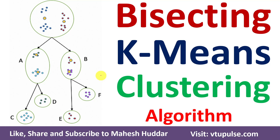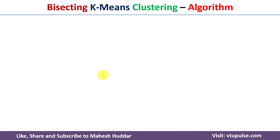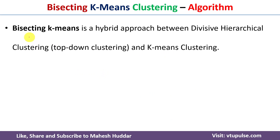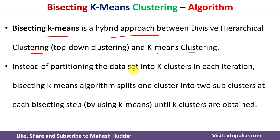Welcome back. In this video I will discuss the bisecting k-means clustering algorithm in machine learning with a simple example. First we will understand what bisecting k-means is — it is a hybrid approach between divisive hierarchical clustering and k-means clustering algorithm. I have already discussed both divisive hierarchical clustering as well as k-means clustering algorithm, and I have solved numerical examples — links for those videos are given in the description below.